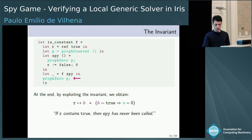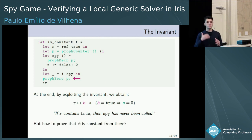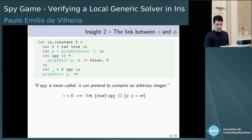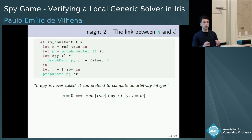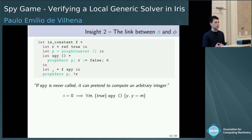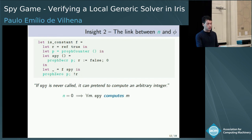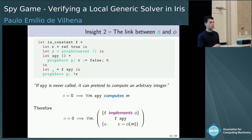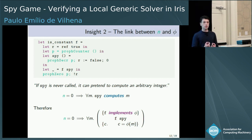I have not yet explained how to relate the number of times spy is called to whether phi is a constant function. The idea is: if spy has never been called, then spy is dead code — we can give it any specification, even a false one. We can say it computes an arbitrary integer m, even though we know from the implementation that it computes zero. By exploiting that spy computes an integer m and the fact that f implements phi, we compose these two specifications to conclude that after executing f applied to spy, we have phi of m for an arbitrary integer m.